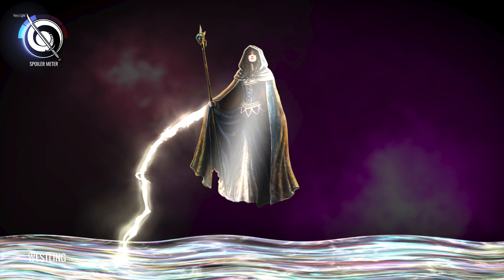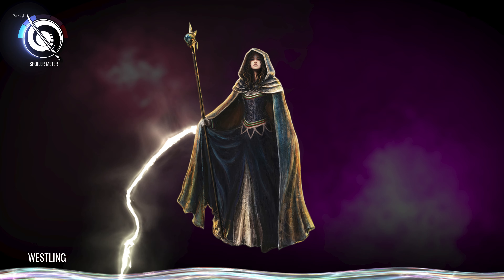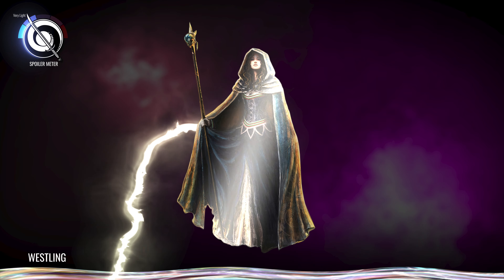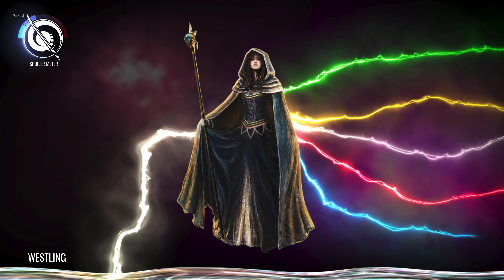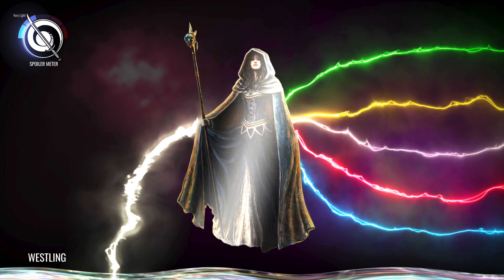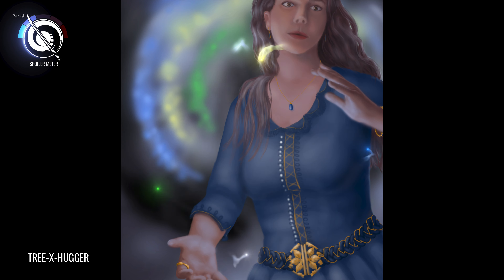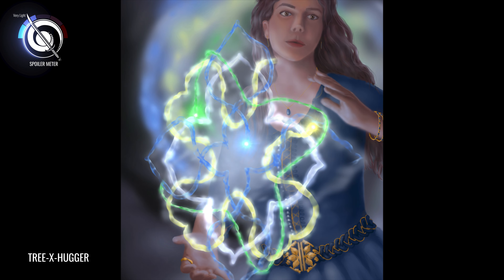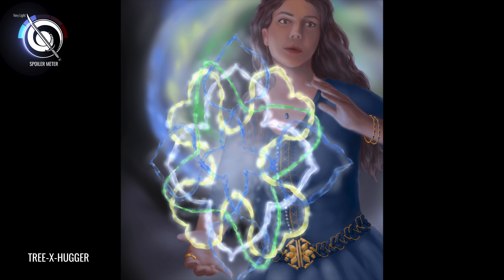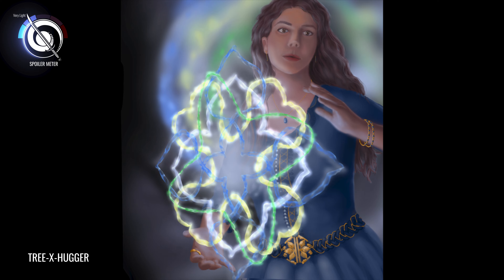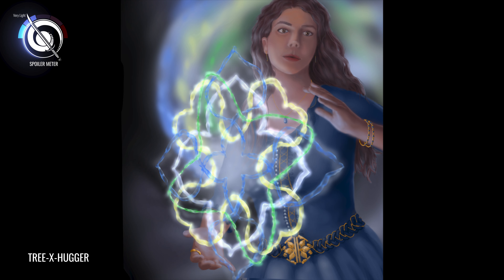When a channeler does hold the power, they can then channel it or divide it into flows or threads of power. The channeler can then weave the flows together, like a quilt or pattern, to create different magical actions.